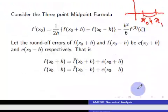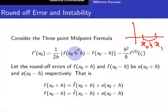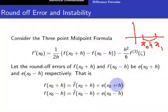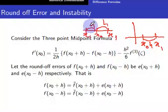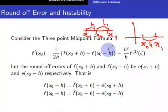So this is the three-point midpoint formula. Here x₀ is the midpoint, x₁ is to one side, and x₋₁ is on the other side. The gap between any two consecutive x's is h. If you bring these two terms close to x₀, the round-off error will kick in.